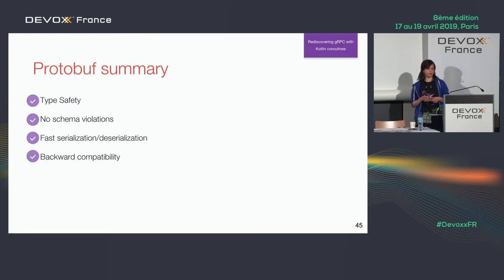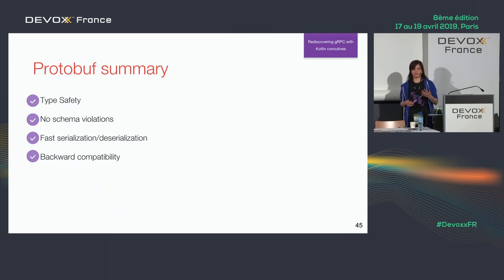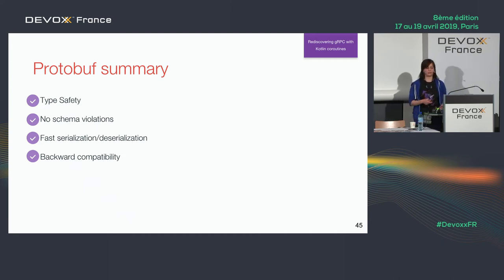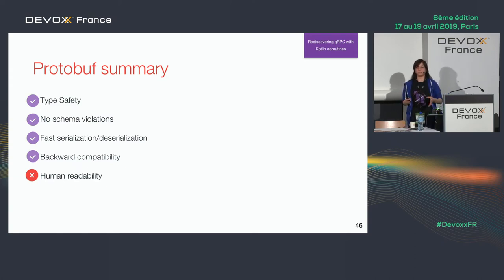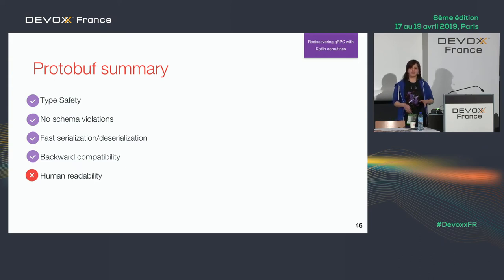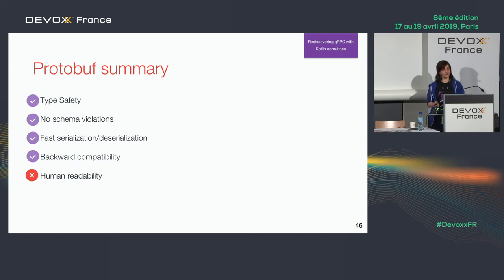Protobuf serializes and deserializes in binary, so you transfer only bytes, which are cheaper than strings and JSON — that's why it's faster. One of the main features of protobuf is backward compatibility: your fields are optional, so you can easily deprecate them and add new ones. The main disadvantage is human readability — if you want to debug and you have this message, it's just bytes, and it's difficult to understand. So if you need human readability, protobuf is not for you. If you don't need it, it's an excellent tool.